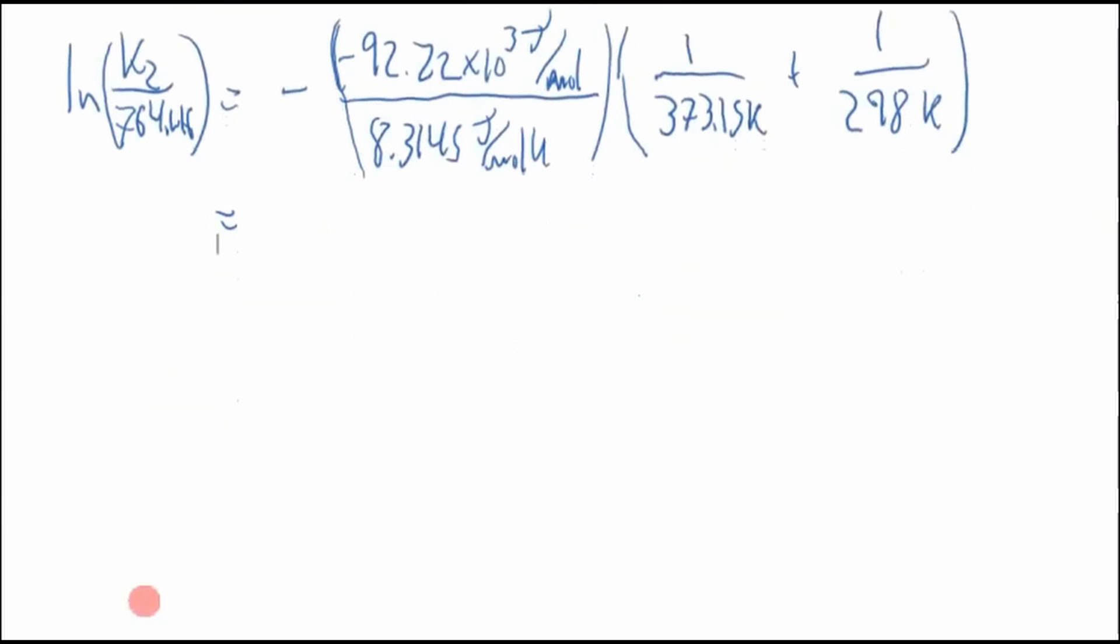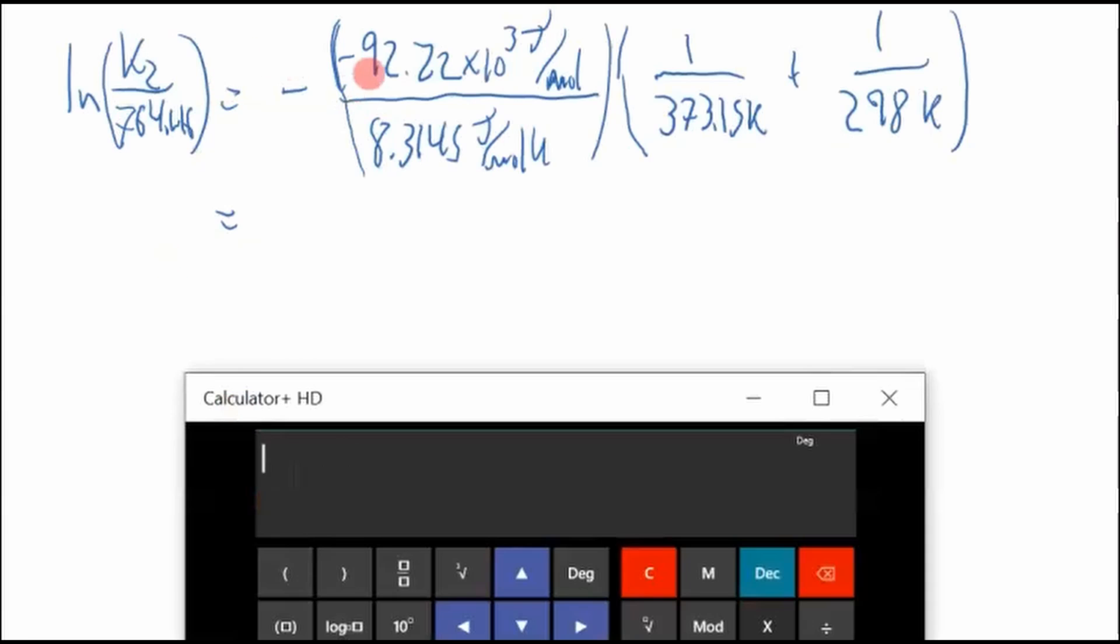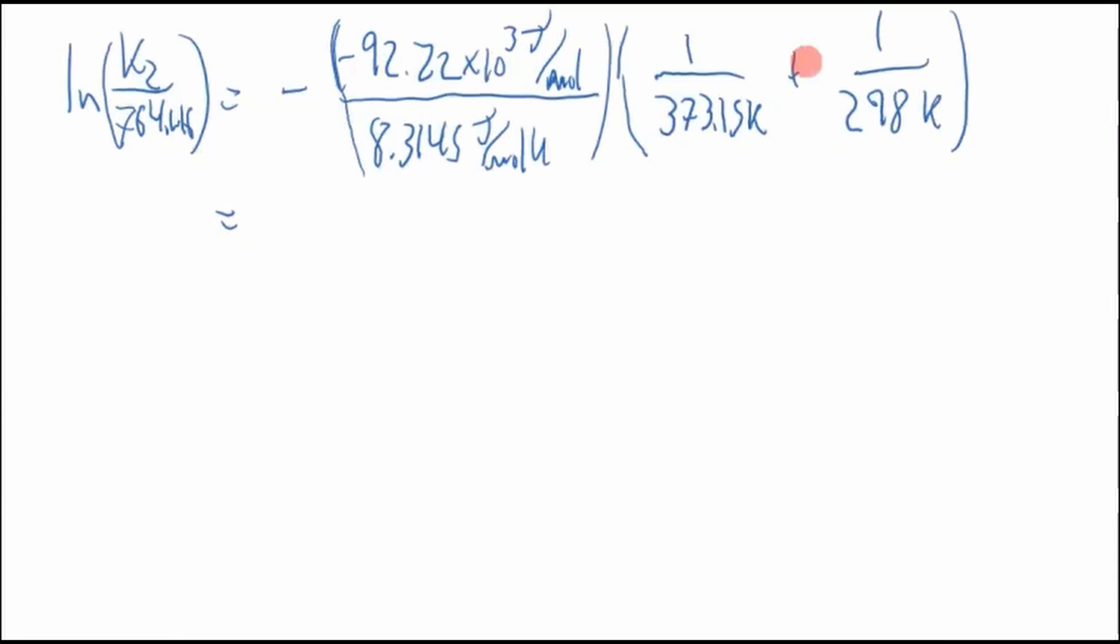Now, T2 is 100 degrees Celsius, which is 373.15 Kelvin if we add 273.15. And T1 is 298 Kelvin. Okay, so we'll do the right-hand side first. So the right-hand side, a negative and a negative, that'll be positive. So 92.22 times 10³ divided by 8.3145, times 1 divided by 373.15, oh, no, it's not plus, it's minus. It's a subtraction. Ooh, that was a close one.